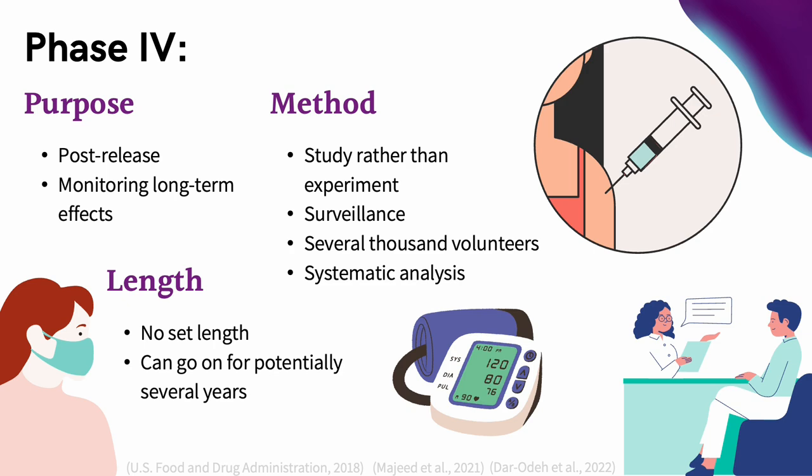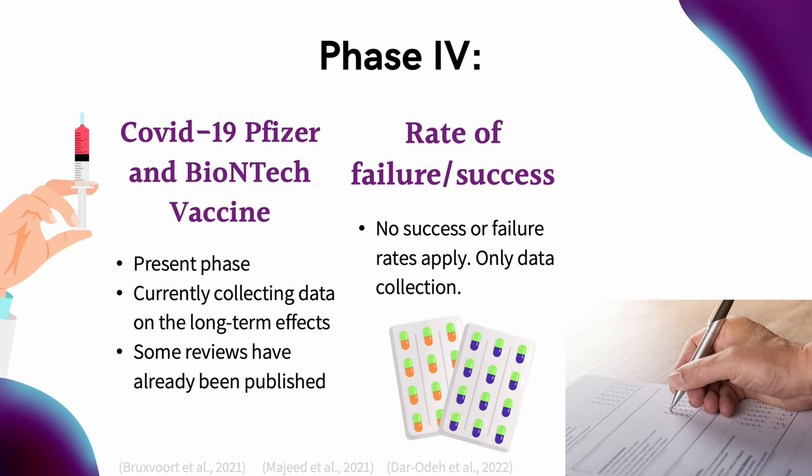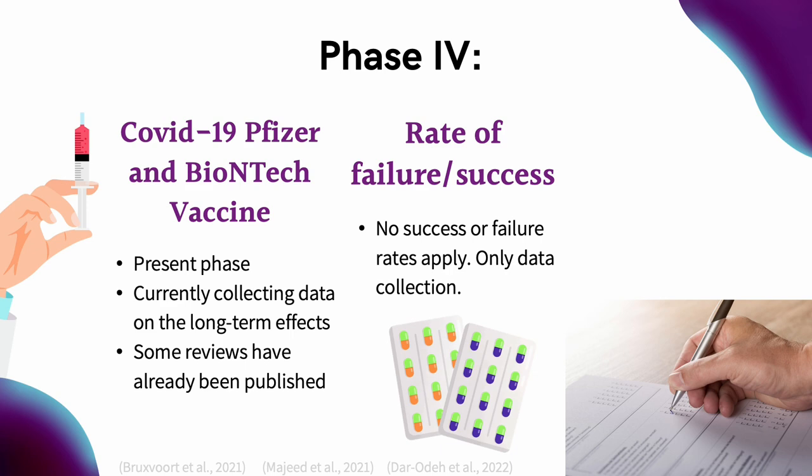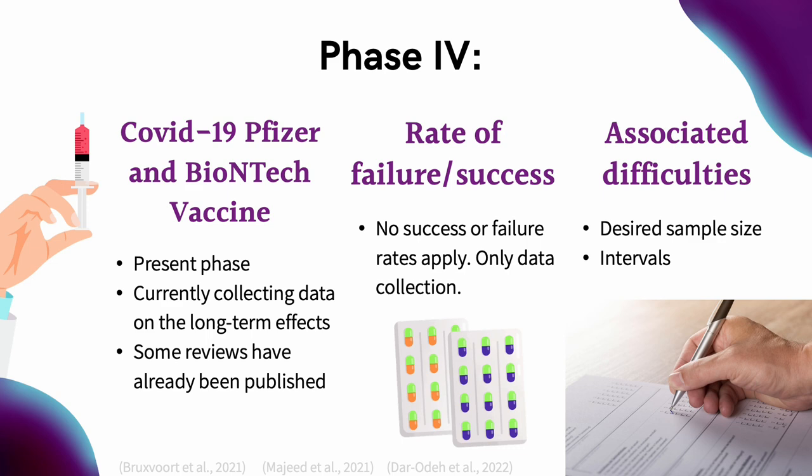For the COVID-19 vaccine, this is the present phase. Researchers are currently collecting data on the long-term effects of the vaccine. Some reviews have already been published and can be found on the references page in the description below. In this phase, it may be difficult to achieve the desired sample size and determine the necessary intervals to follow up with patients.